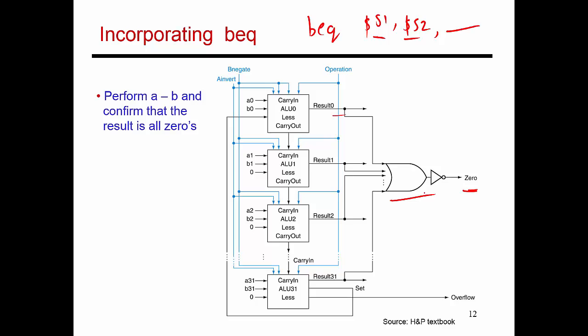So to add support for branch on equal to, all I need to do is perform a subtraction, and then I'm producing a new signal, which tells me if the result of the subtraction is 0 or not.